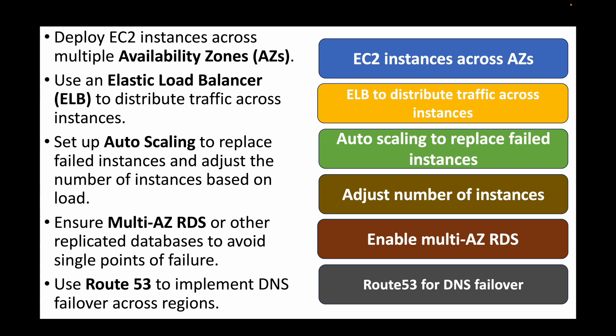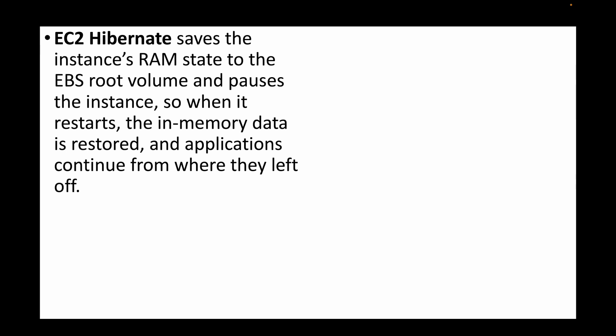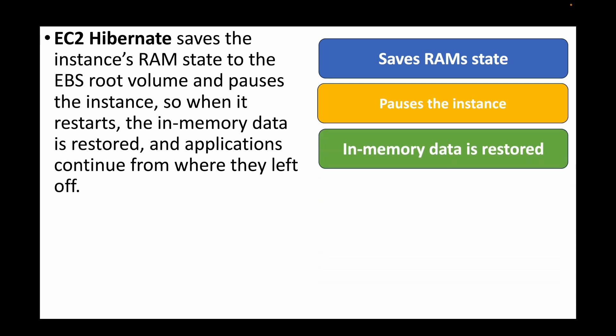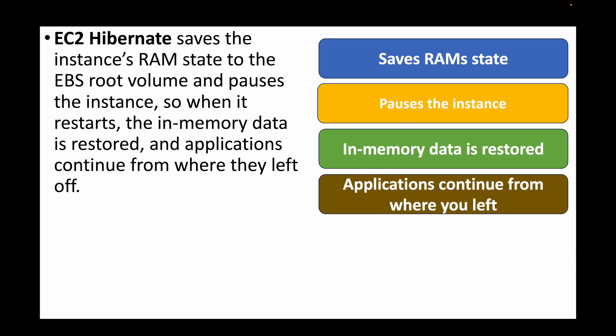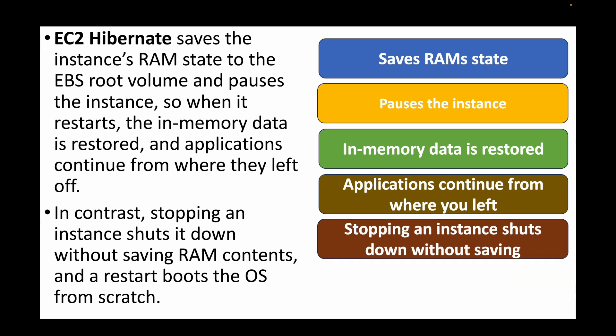The next question is: what is EC2 hibernate and how is it different from stopping an EC2 instance? EC2 hibernate saves the instance's RAM state to the EBS root volume and pauses the instance. When you restart the EC2 instance, the in-memory data is restored and you can continue working from where you left off — the application data will not be lost.